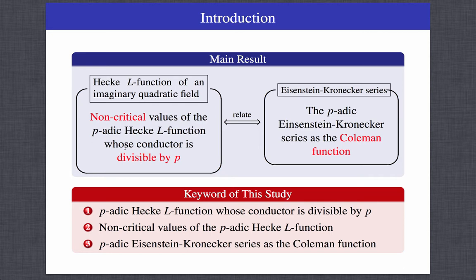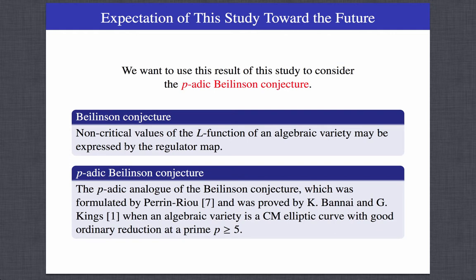In the future, we want to use this result to consider the p-adic Beilinson conjecture. The p-adic Beilinson conjecture states that non-critical values of the L-function of an algebraic variety may be expressed by the regulator map. It is the p-adic analogue of the Beilinson conjecture, which was formulated by Perrin-Riou and was proved by Bannai-Kings when the algebraic variety is a CM elliptic curve with good ordinary reduction at a prime.